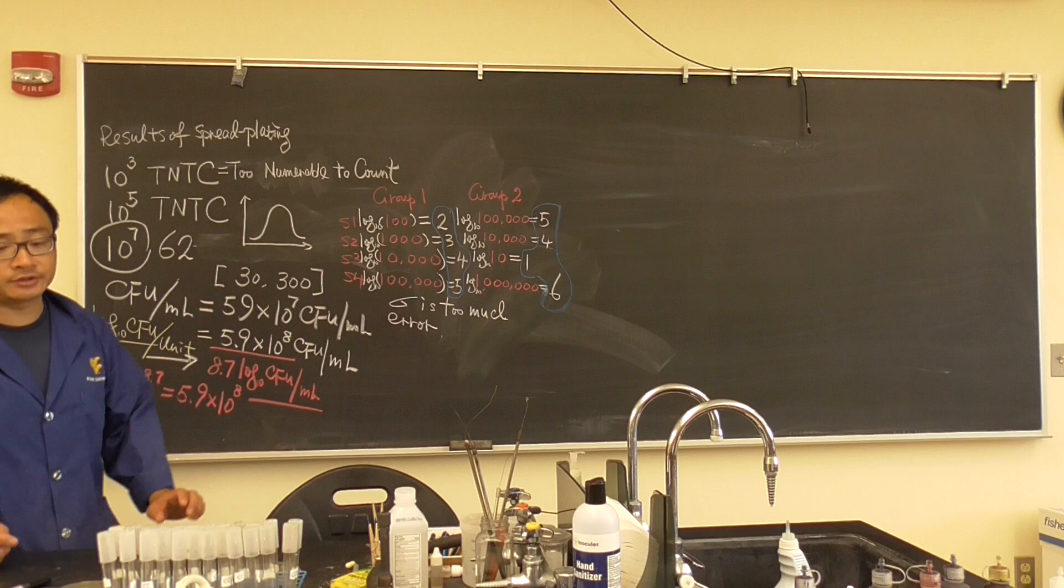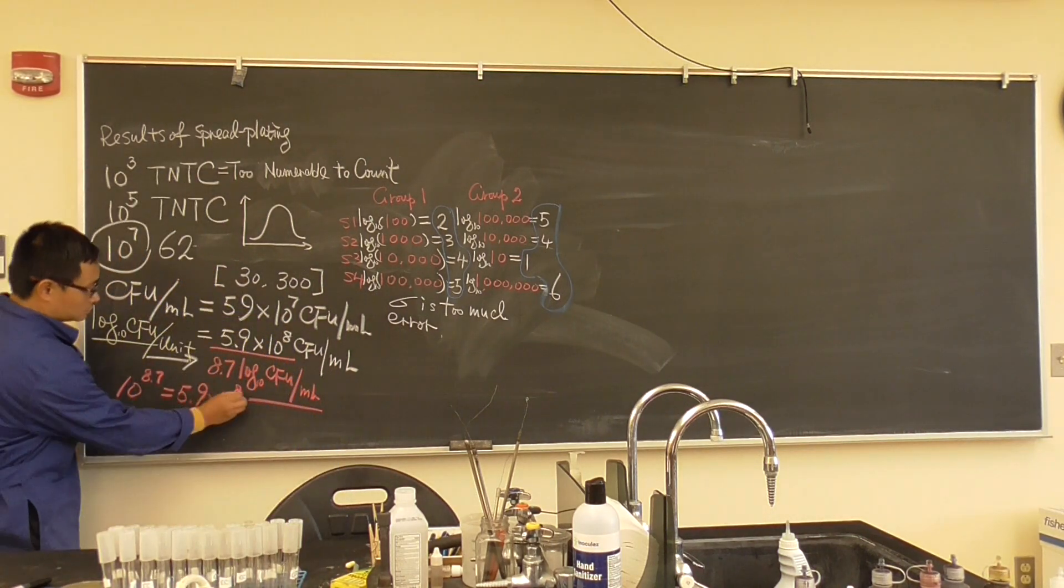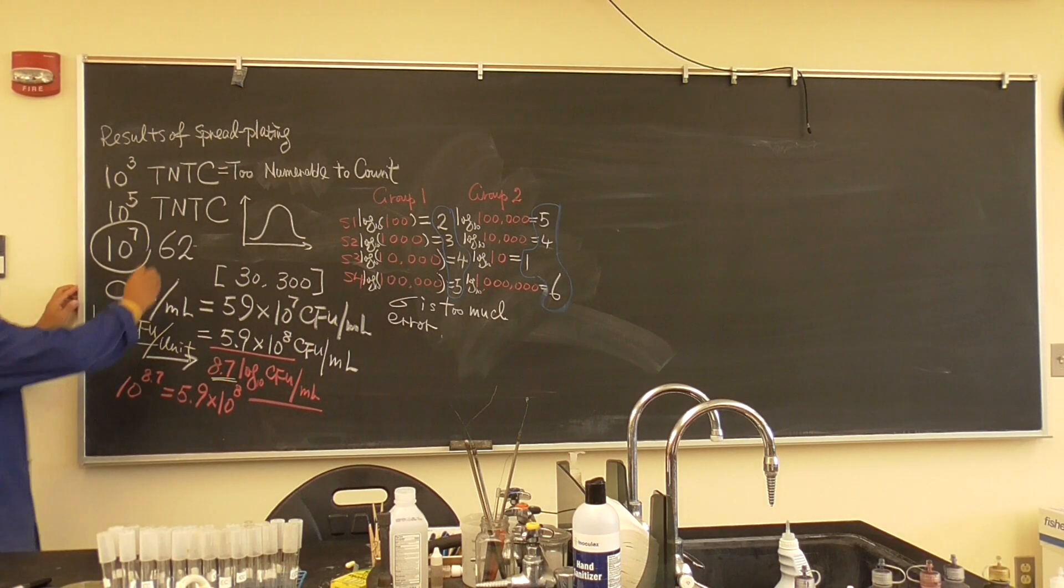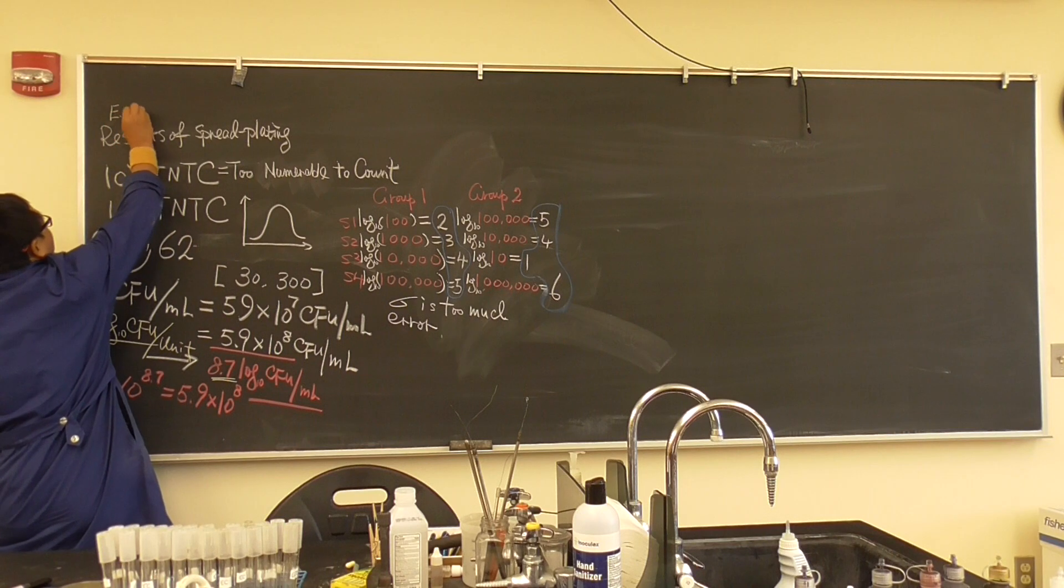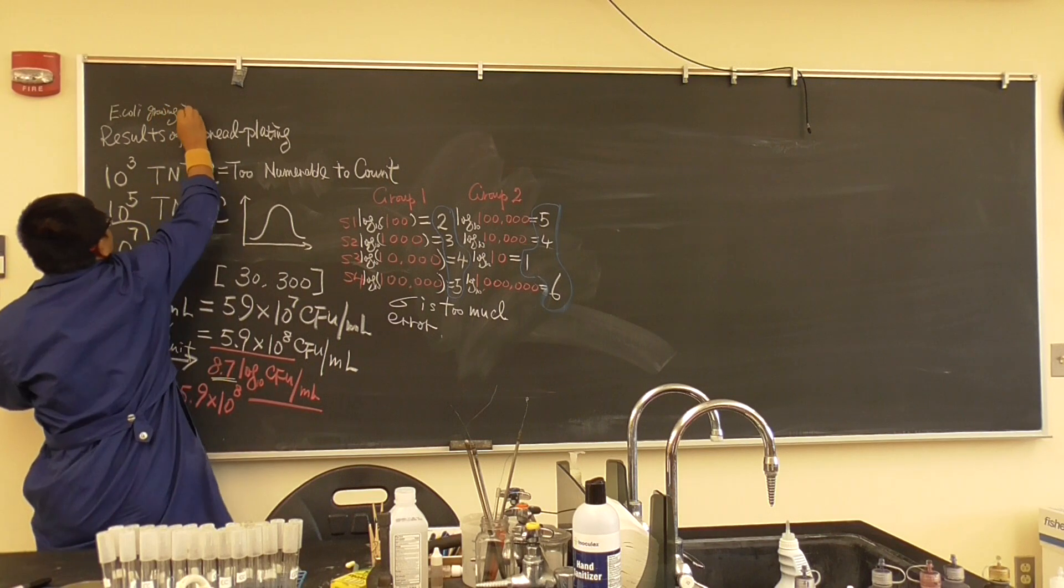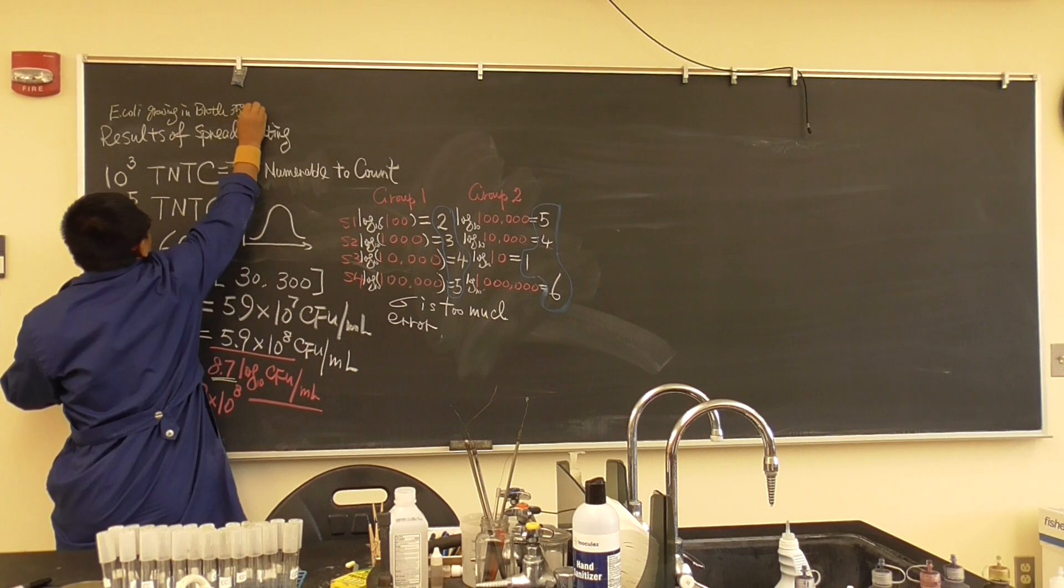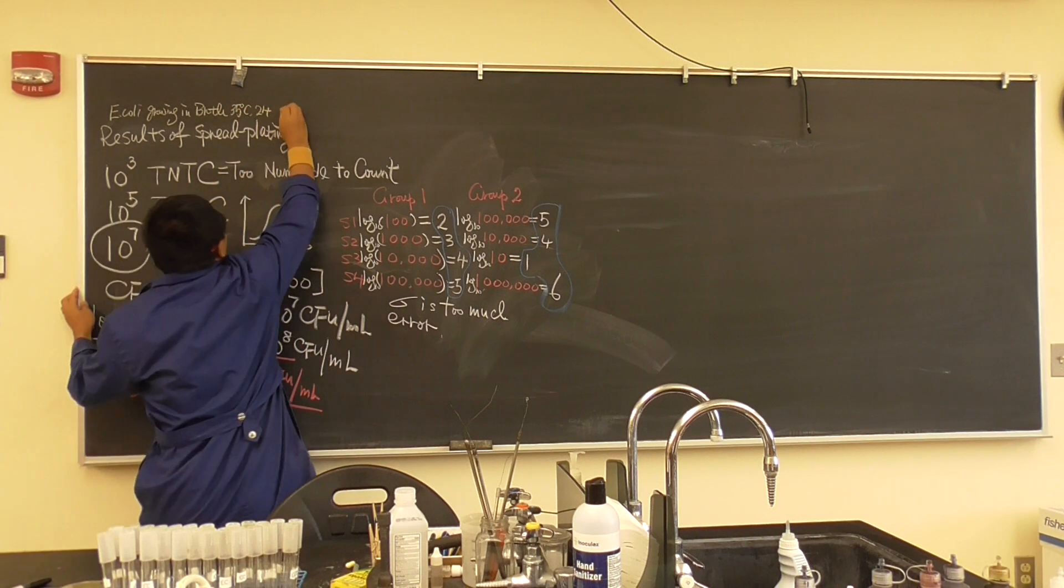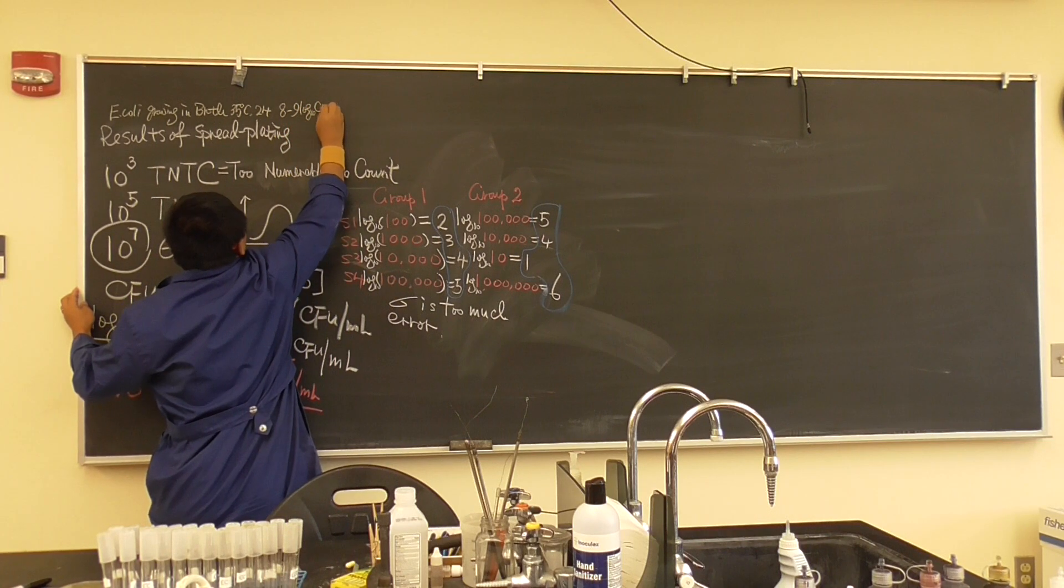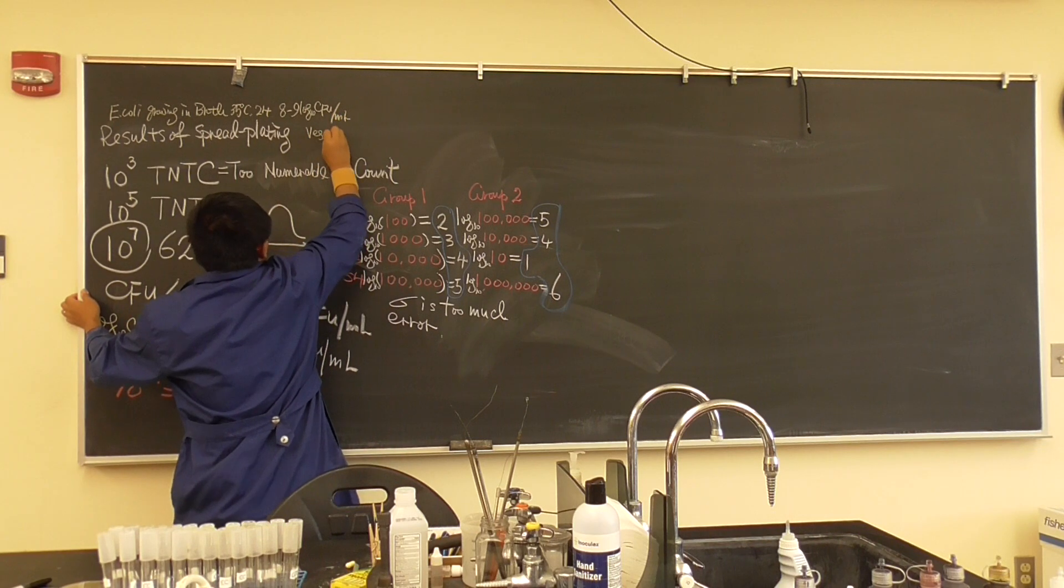So how many bacteria in here? Eight log. So always remember, a bacterial cell, E. coli, growing in broth media after 35 degrees Celsius, 24 hours, usually 8 to 9 log 10 CFU per ml. This is also what we call a typical vegetative cell.